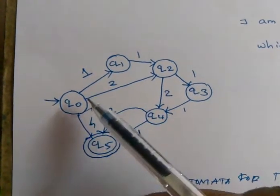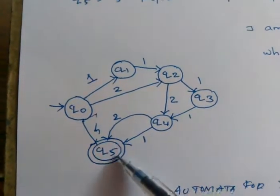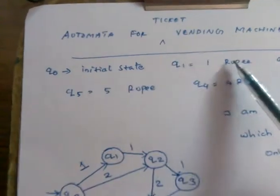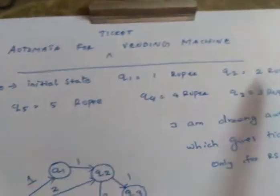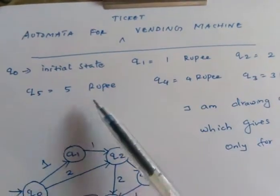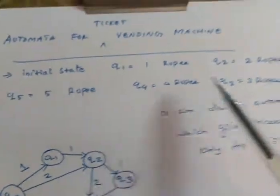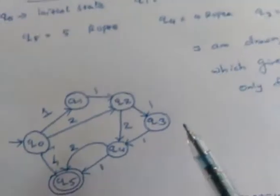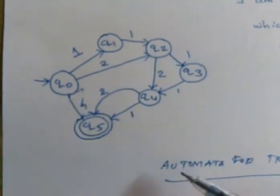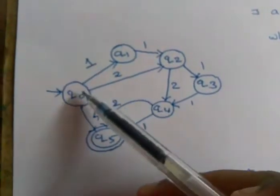For example, if you insert a 1 rupee coin, the machine moves to state Q1. Inserting 2 rupees goes to Q2. The transitions continue: 1 rupee to Q1, 2 to Q2, 5 rupees leads to Q4, tracking cumulative input toward the 5 rupee milestone state.